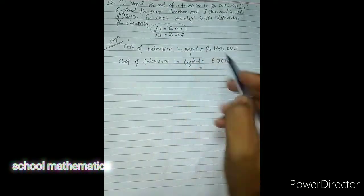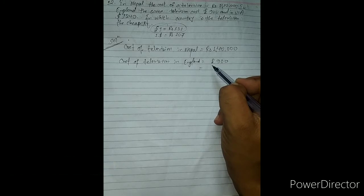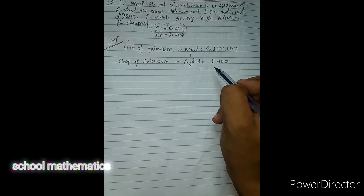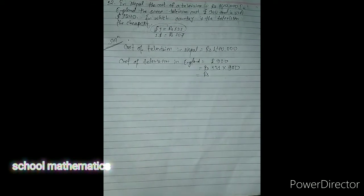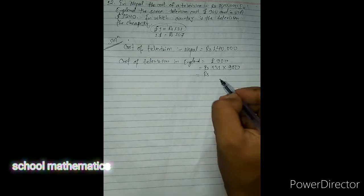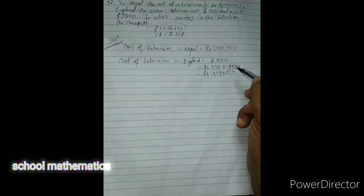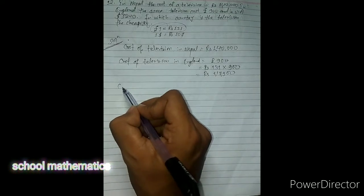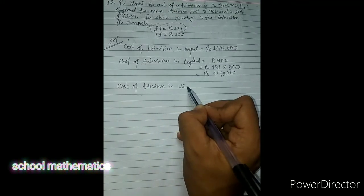Let's find the cost of television in England. It is given as 900 pounds, and one pound equals 131 Nepali rupees. To convert pounds into Nepali currency, we multiply: 131 into 900. That gives us 1179 00, which means one lakh seventeen thousand nine hundred. This means it is cheaper than in Nepal.